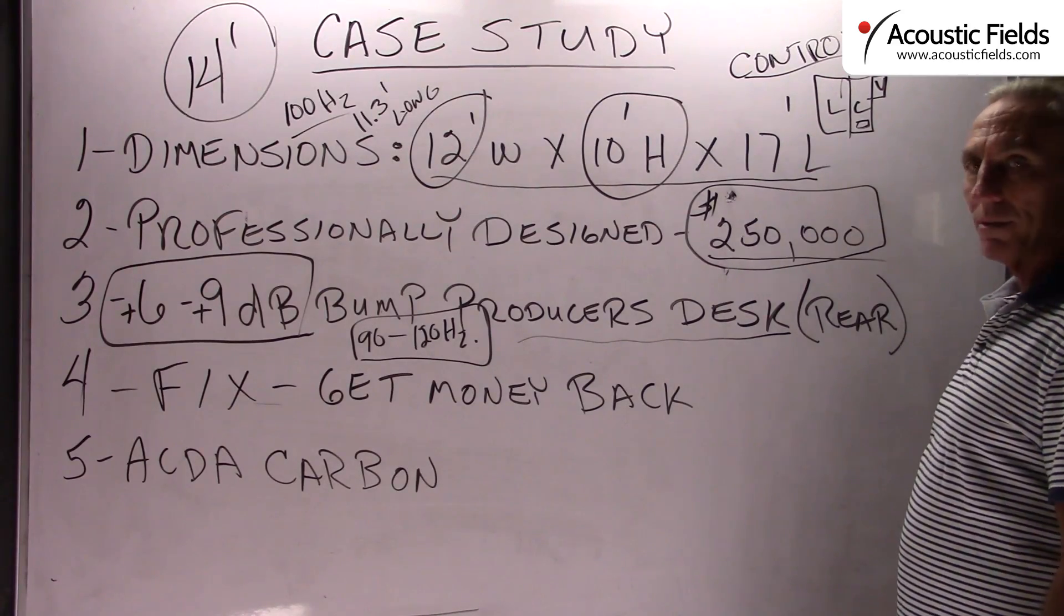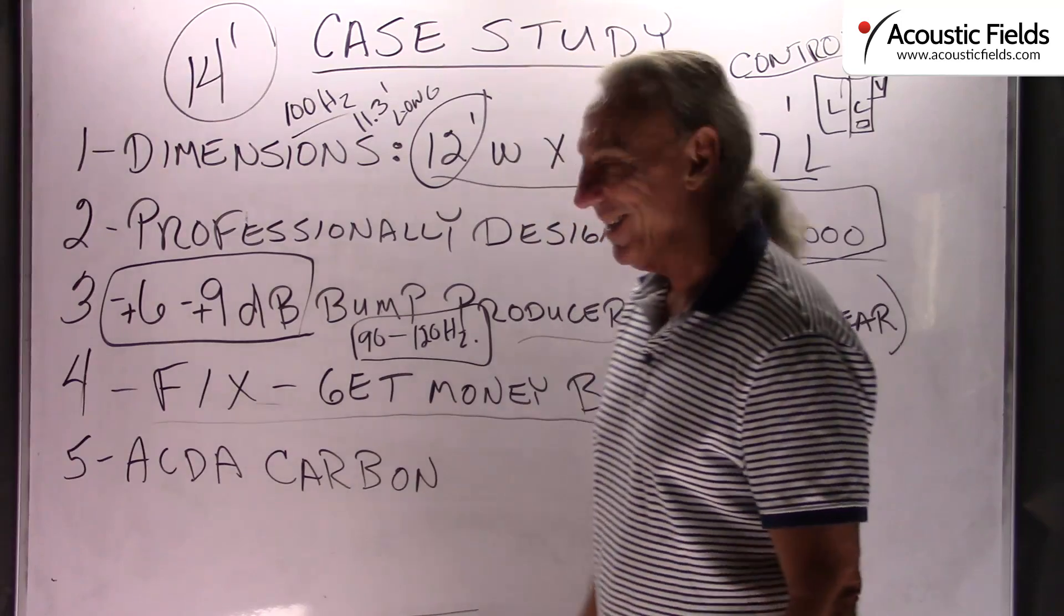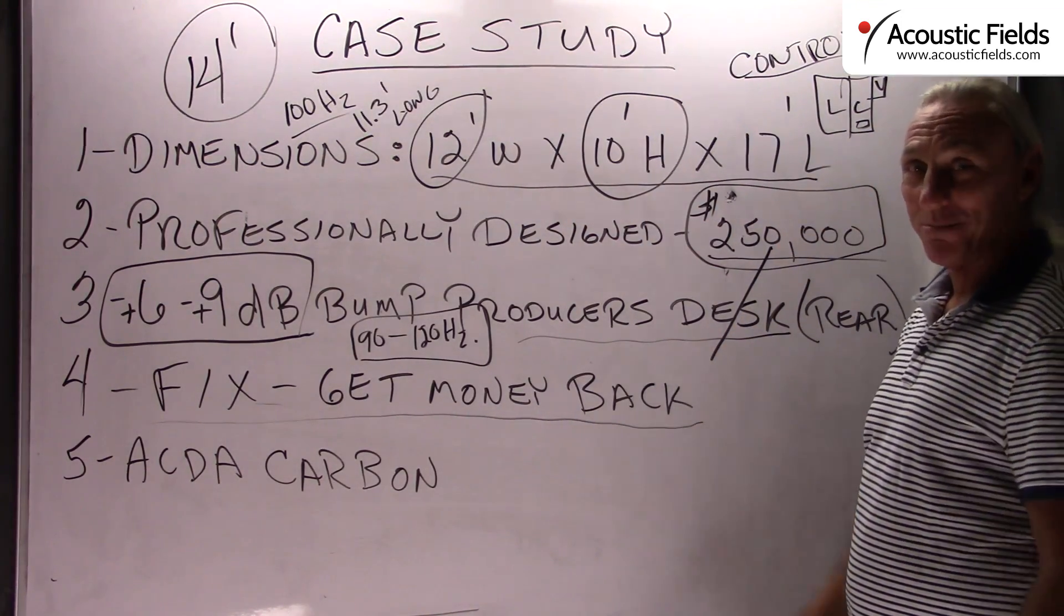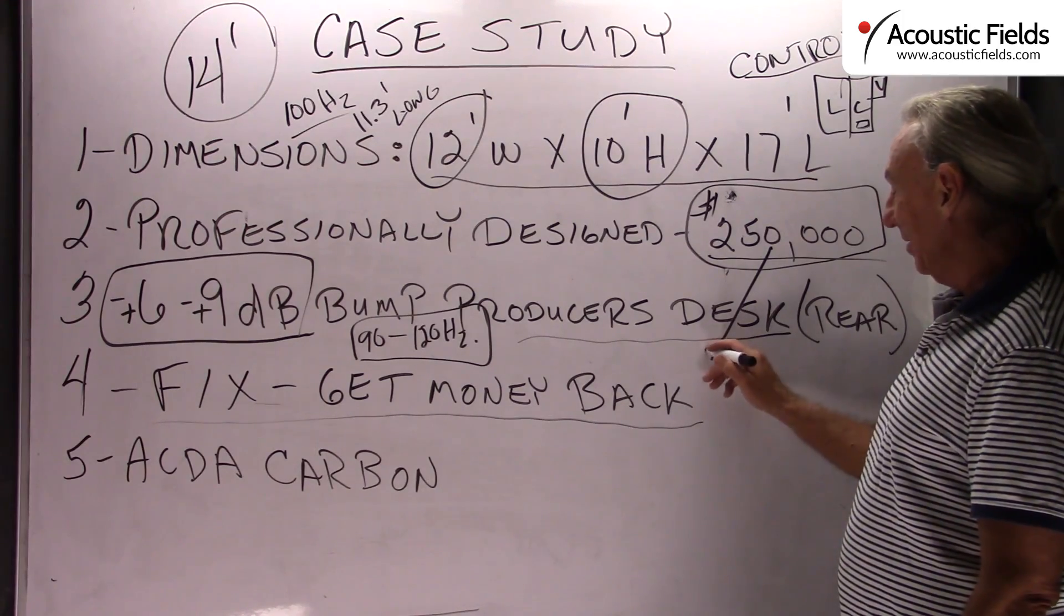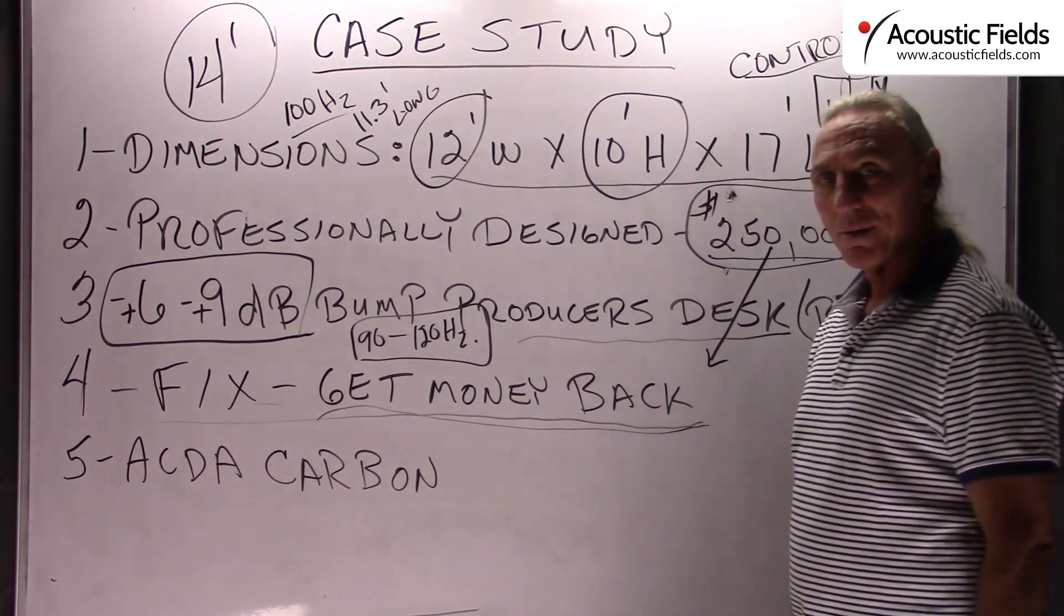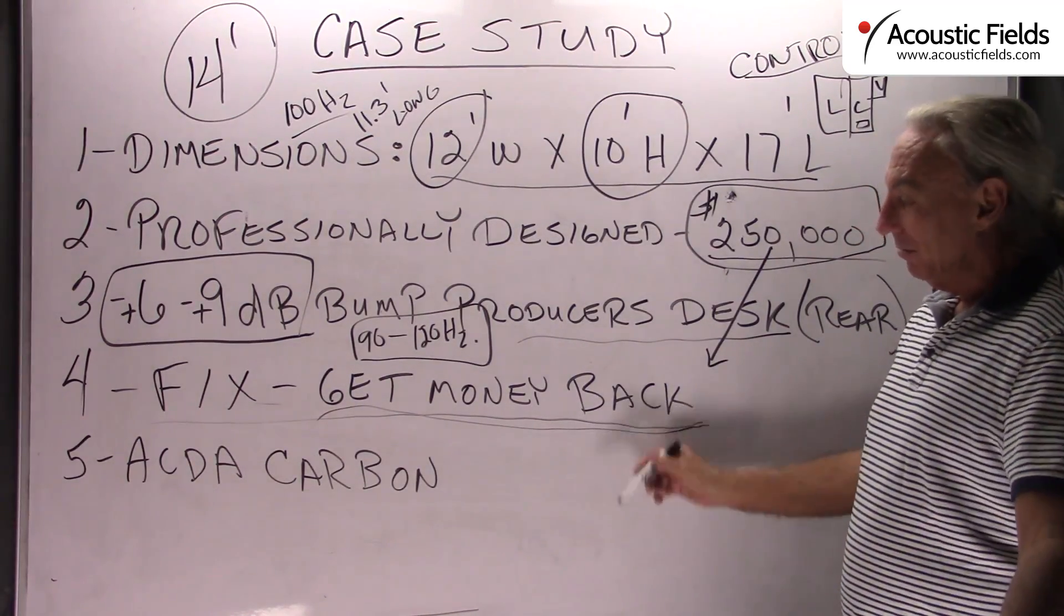So the client called me and he says, you know, how do we fix this? And I said, well, at $250,000, you shouldn't have that problem to begin with. I just strongly suggest you call the designer and get your money back or have him come out and fix it. Well, apparently that's not an option. So what are we going to do?